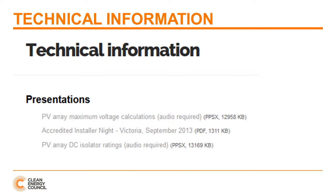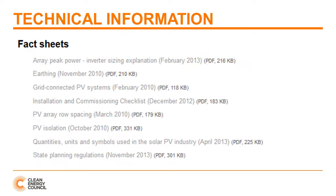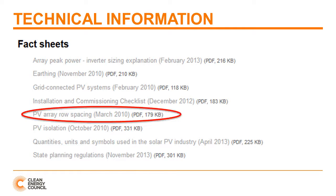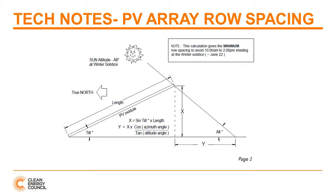Here's a quick example of some existing presentations, and here's a list of existing fact sheets. You might, for example, click through the PV array row spacing link. The PV Spacing Guide provides guidance on how modules on tilt frames can be prevented from shading those behind them.